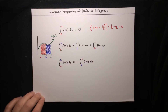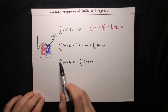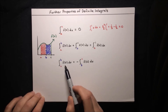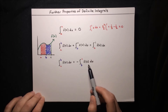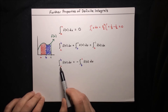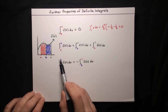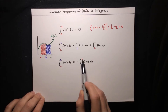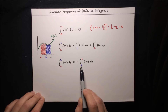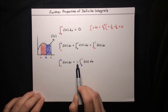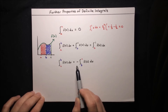The final property is that the integral from a to b of f(x) dx is equal to the negative of the integral from b to a of f(x) dx. This is saying that you can switch the bounds — you can flip-flop a and b, put a on top and b on the bottom — as long as you tack on a negative sign to the outside of the integral.